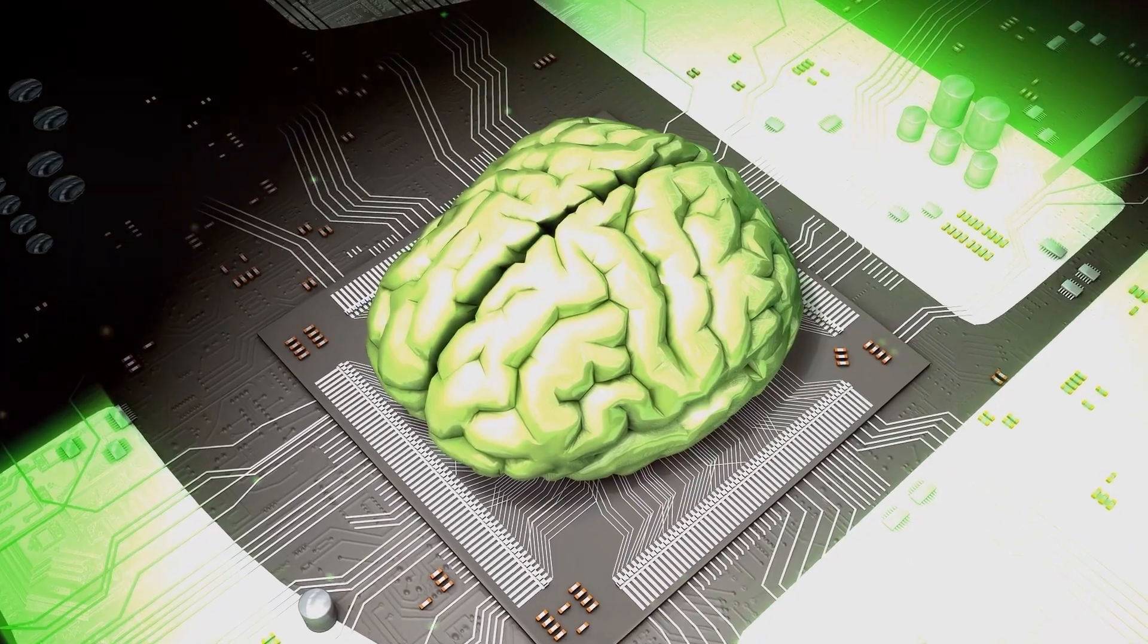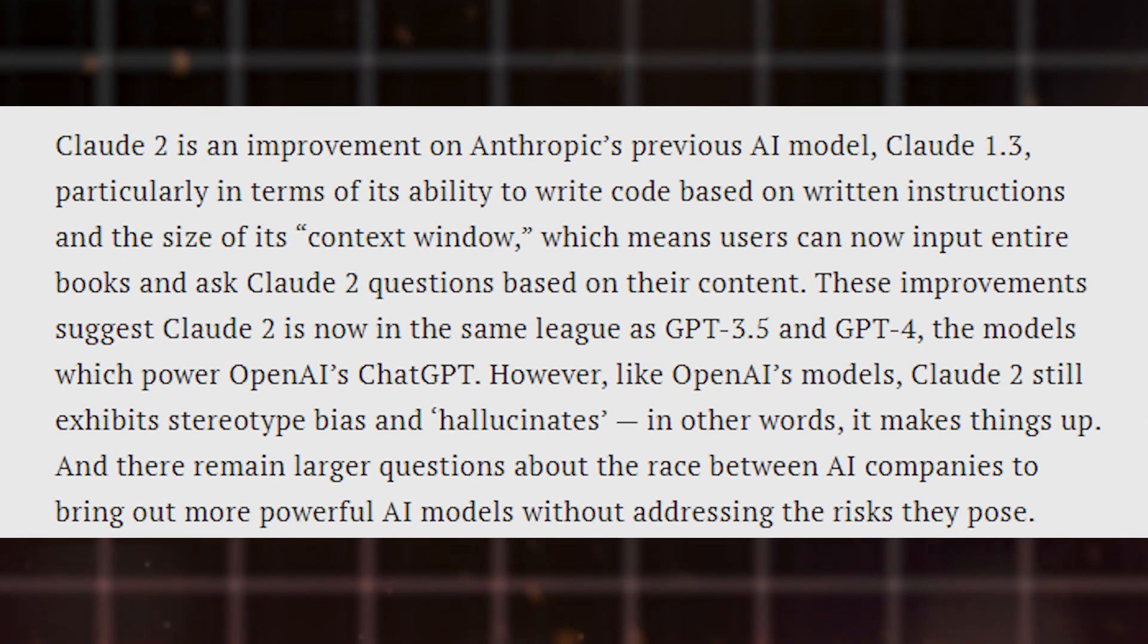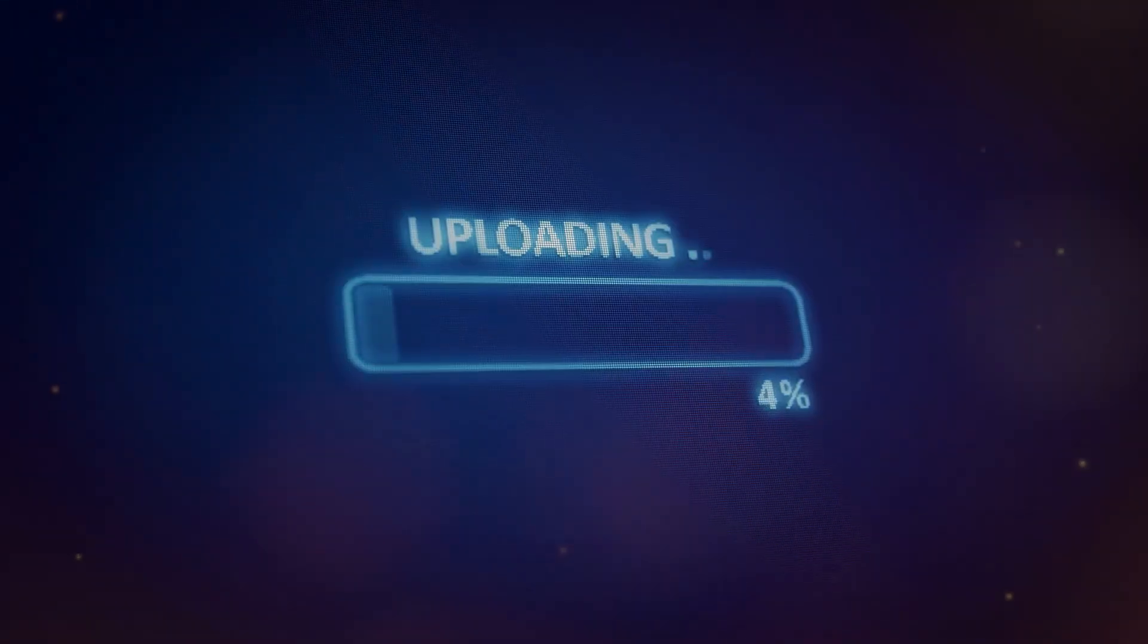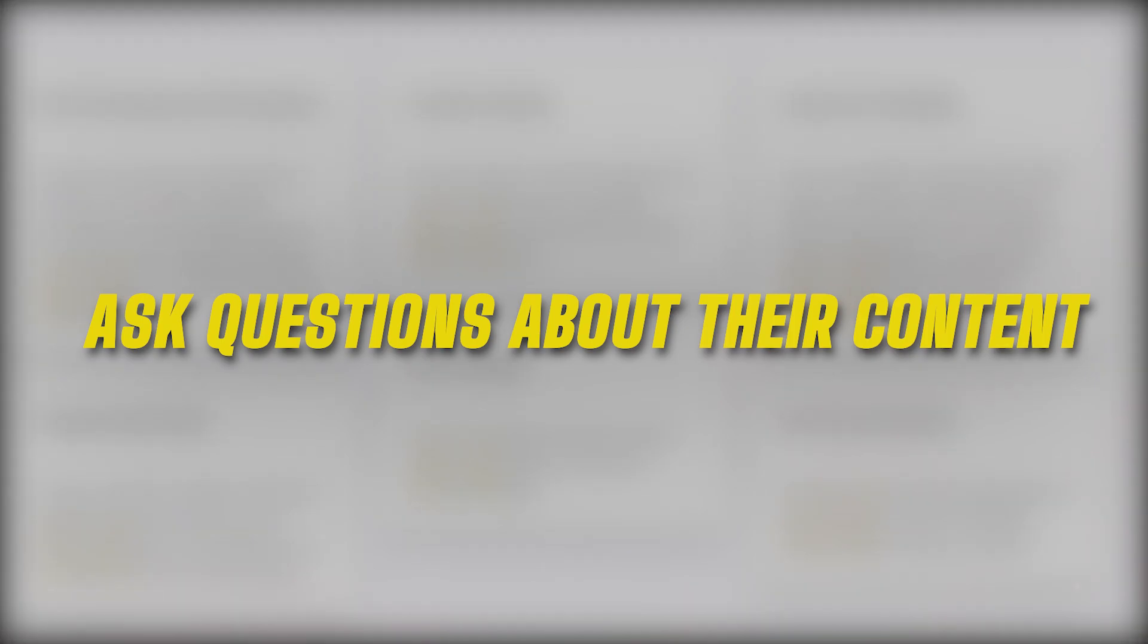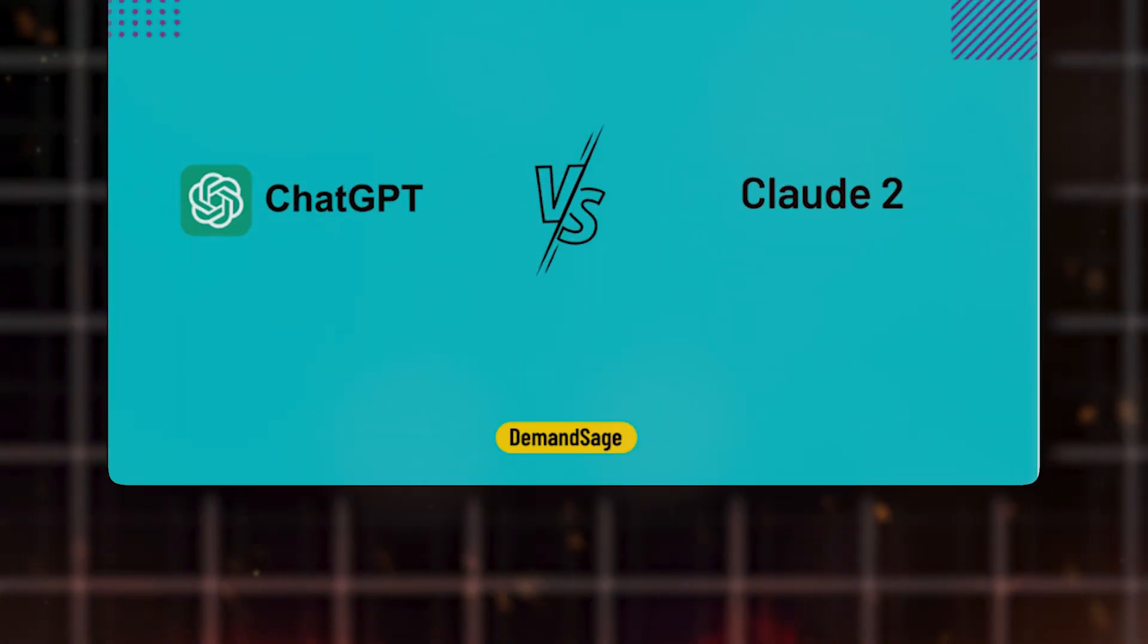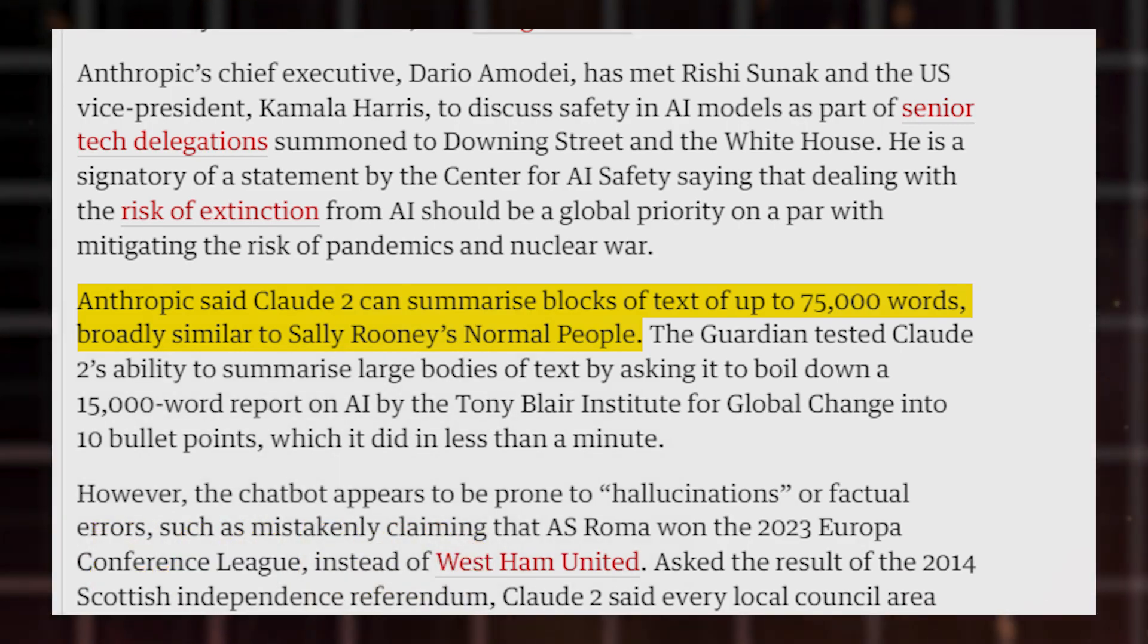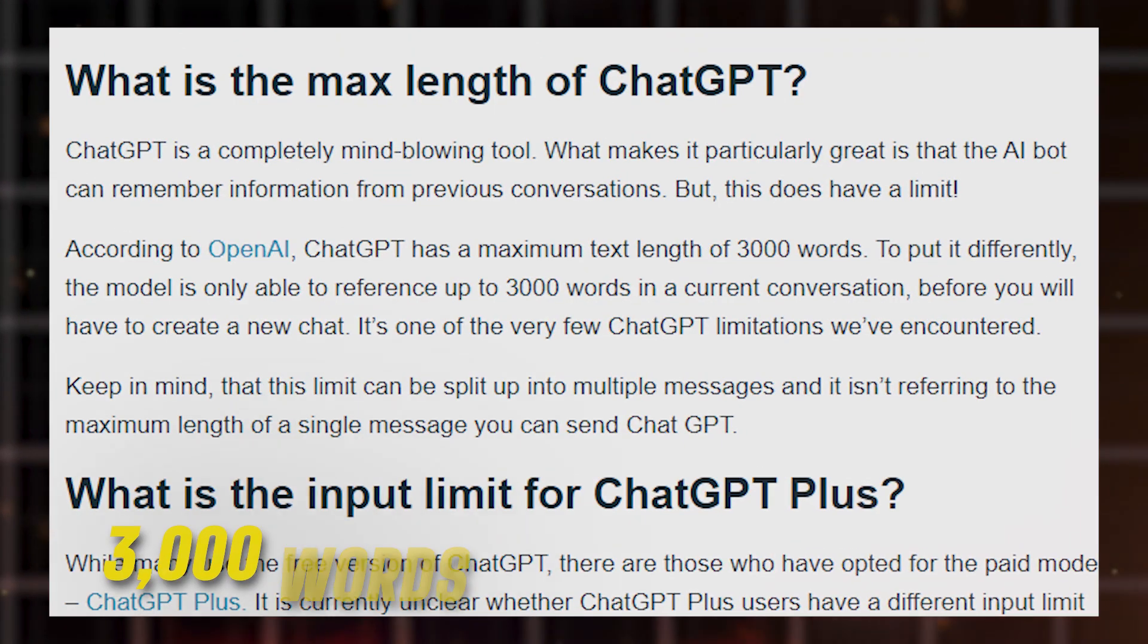This improvement is primarily evident in two areas: its capacity to generate code based on written instructions, and its expanded context window size. With this larger context window, you can easily upload content or an ebook of hundreds of pages into Claude 2 and ask questions about their content. Claude 2 has some incredible features that surpass that of ChatGPT. It can summarize large content of up to 75,000 words explicitly, highlighting all the detail, while GPT-4 can barely exceed 3,000 words.